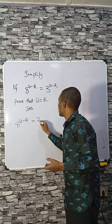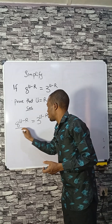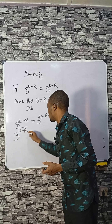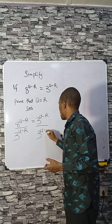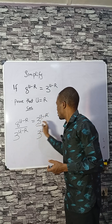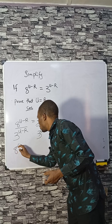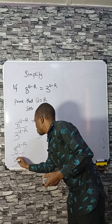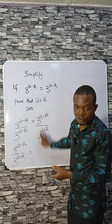We have 8 raised to power u minus r, equals 3 raised to power u minus r. So what if I divide through by u minus r? Dividing this by u minus r as well, so we have 8 raised to power u minus r divided by 3 raised to u minus r, equals 1.